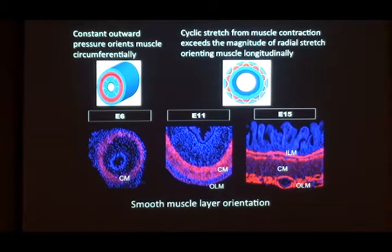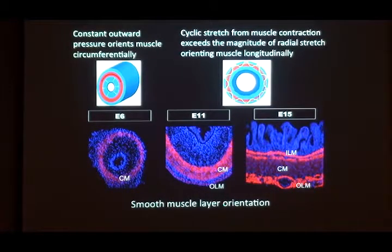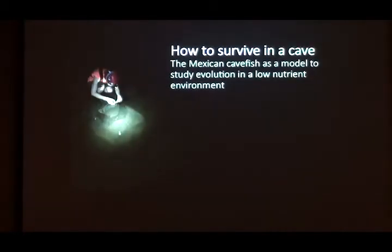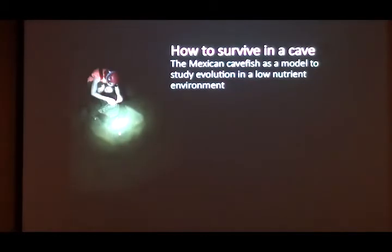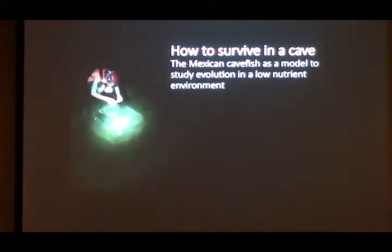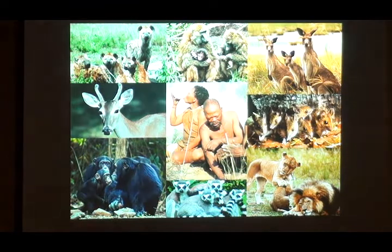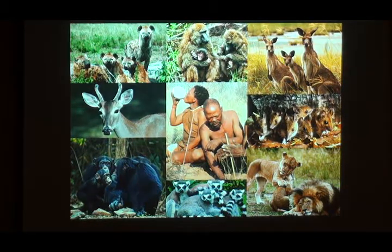The story from the second half of the talk is actually not about development, but is more metabolic — how to survive in a cave. This is working on the Mexican cave fish, Astyanax mexicanus, a system that Patty works on. But I'm going to start by setting it up by talking about people.